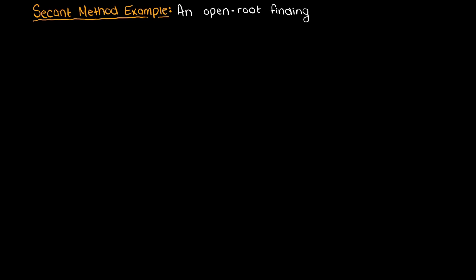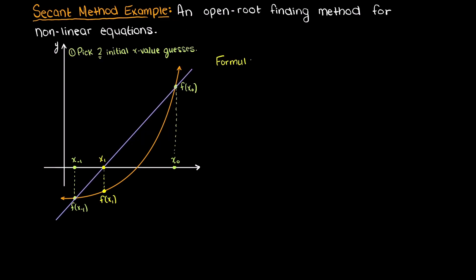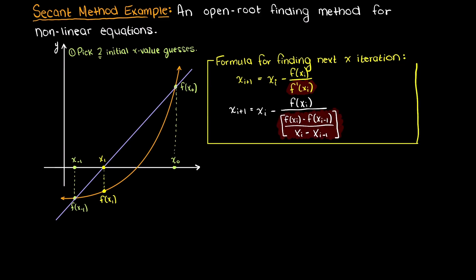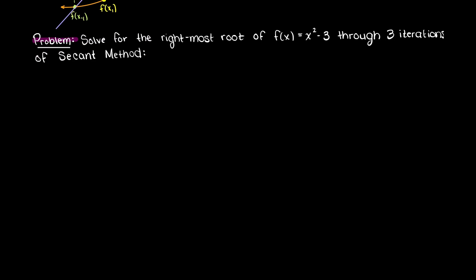Hey everyone, in this video we are going to be walking through an example solving a problem using the secant method by hand. As we discussed in the previous video, the secant method is an open root finding method for non-linear functions, meaning that we pick two initial x values and then iteratively solve for a root from that point. We are told to solve for the rightmost root of the function f(x) = x² - 3 through three iterations of the secant method.